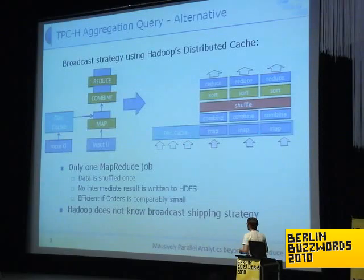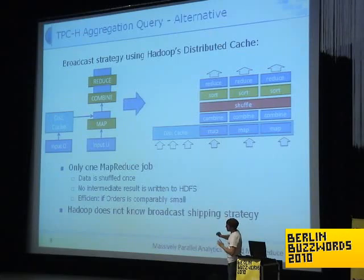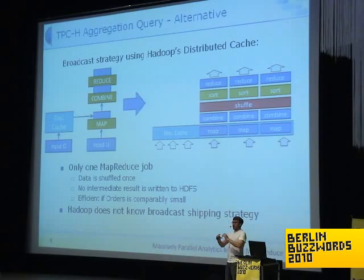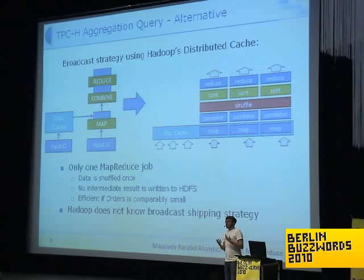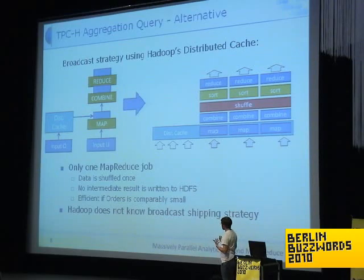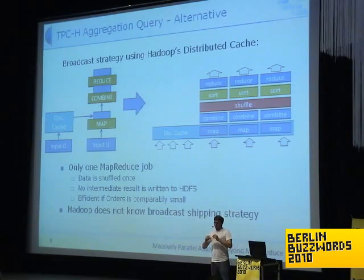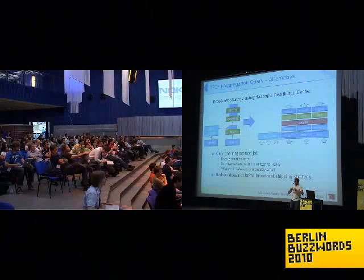There is at least one other option. We could use the distributed cache to simulate something like a broadcast strategy. This way we would put the smaller relation — the orders table — into the distributed cache. Then all mappers could access the data within the cache and do the join within the Map step, only requiring the reduce step to do the aggregation. This would result in only one MapReduce job, so we don't have to shuffle the data twice or write intermediate results into the distributed file system.